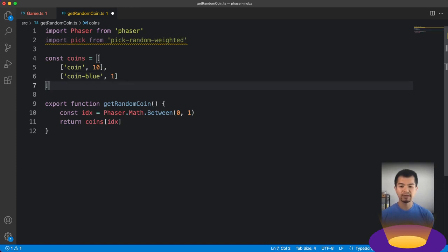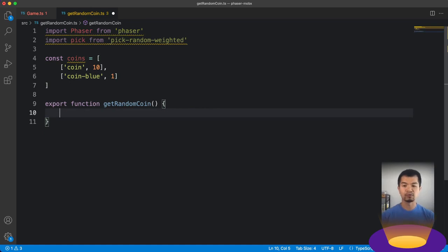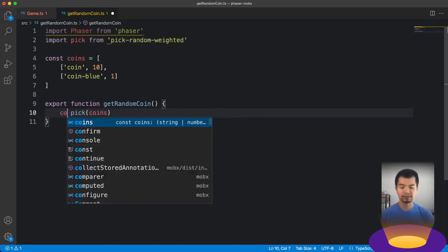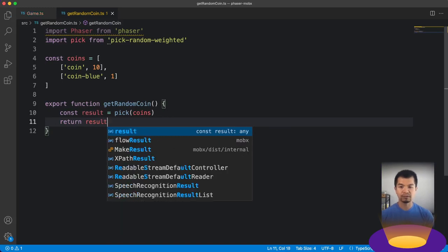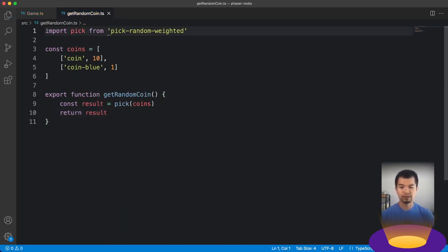And then in our getRandomCoin here, instead of doing a Phaser random number, we're going to do pick(coins) and it's going to give us a result. And the result is going to be these keys, either coin or coin-blue. Let's return result. Now let's clean this up. We don't need Phaser anymore here. And so that's now our new getRandomCoin function that uses a weighted table from the pick-random-weighted library. Let's check out how this feels in the actual game.